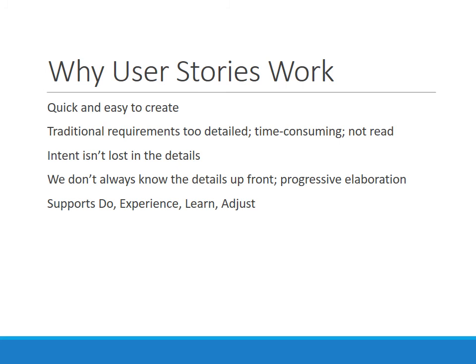User stories support the do, experience, learn, and adjust process that's so great about Agile — you do something, you experience it, see what you like or don't like about it, learn from it, and adjust. In our food truck example, if we deployed something where we didn't like the way we picked the date, that's okay — we'll just create a new user story and be more specific about how to choose a date next time. Because it's small, it can be implemented very quickly. From experiencing the first iteration, we learned and made the adjustment. User stories and Agile in general allow us that flexibility, and that's why user stories work.